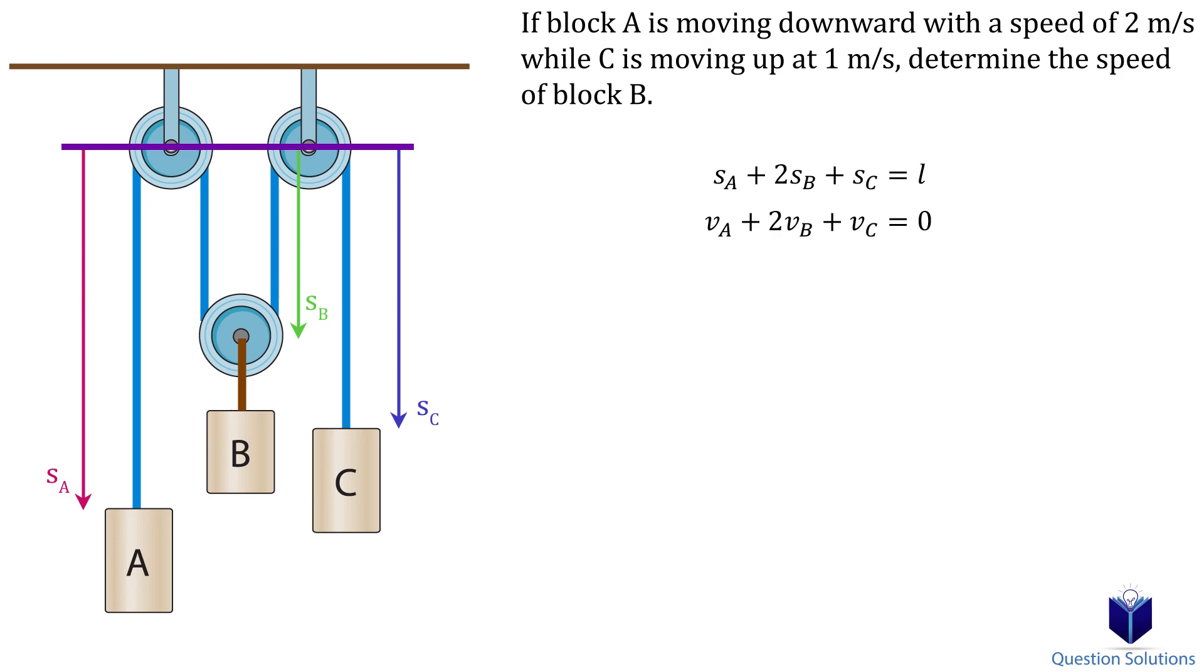The question says the speed of block A is 2 meters per second downwards and block C is moving up with a speed of 1 meters per second. Here you have to be careful. When we drew our position coordinates we drew them downwards. Meaning we assumed any movement downwards to be positive. Block A is moving down but block C is moving up. So for block C it's negative 1 meters per second.